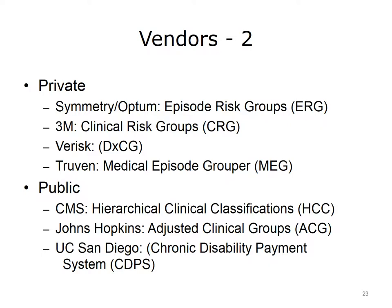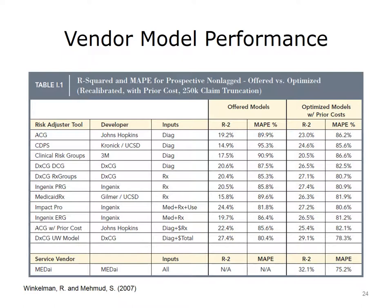There are many other risk adjustment models for sale and use. A 2007 study by Winkleman and Mahmood for the Society of Actuaries compared various risk adjustment models using the performance statistics we discussed — R-squared and mean absolute prediction error. The highest performing risk score, Verisk DXCG, using only diagnosis information and age and sex, had an R-squared value of 20.6, and 26.5 when previous cost information is included. The CDPS model was the lowest, with an R-squared of 14.9. The mean absolute prediction error is presented as a percent of the prediction itself, so the errors often are nearly as large as the prediction itself. Lower MAPEs are better and generally follow the R-squared.